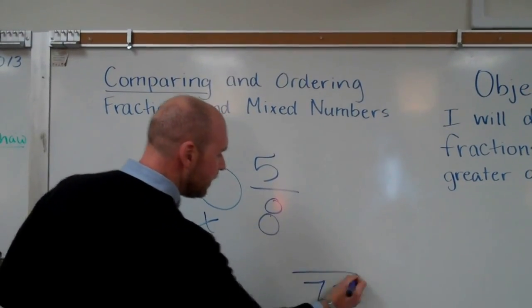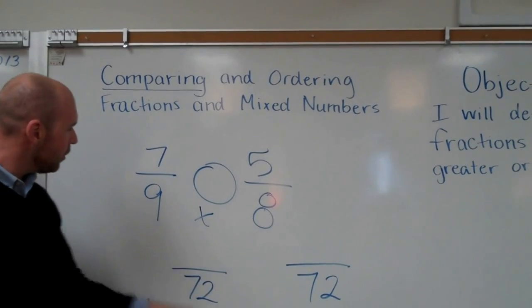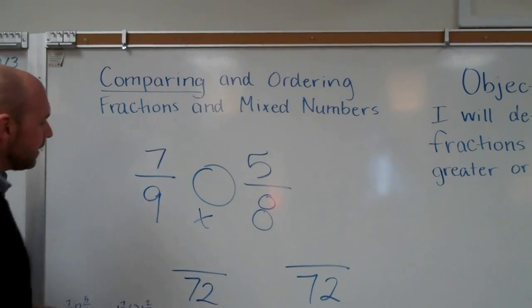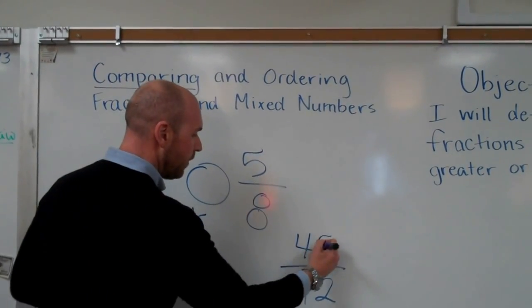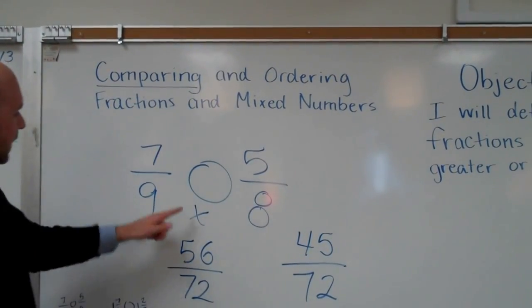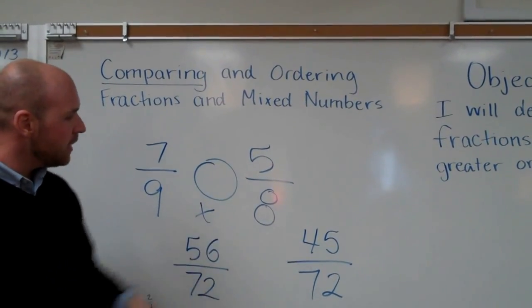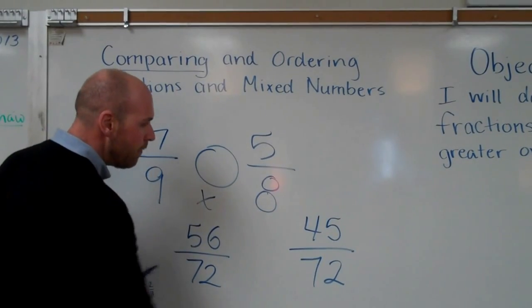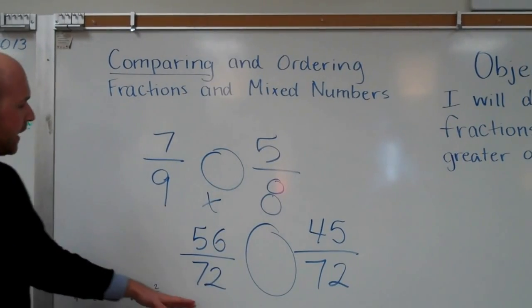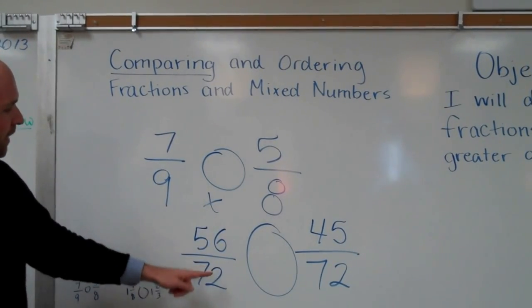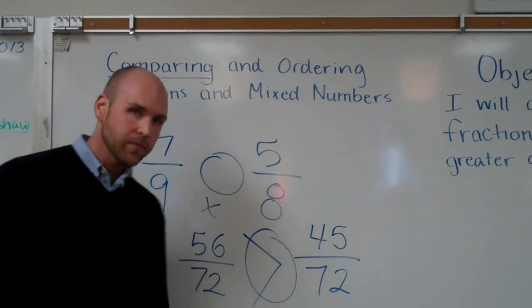Okay. My new denominator is seventy-two and seventy-two. And how did I get them? Well nine times eight is seventy-two. Seven times eight is fifty-six. Five times nine is forty-five. Because nine times eight is seventy-two. Seven times eight is fifty-six. Eight times nine is seventy-two. Five times nine is forty-five. Now I can compare. I got a totally new happy denominator that agrees. So I know that fifty-six seventy-twos is greater than forty-five seventy-twos.